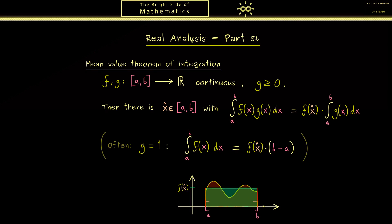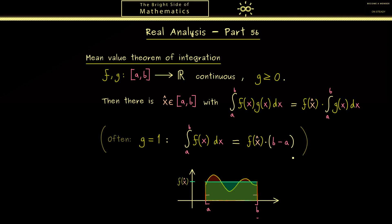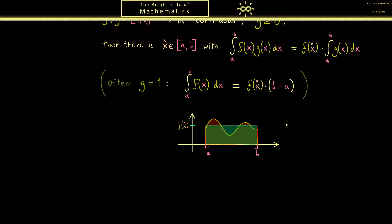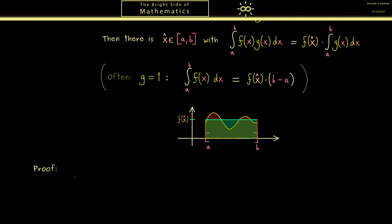Sadly the visualization for the general formulation of the theorem is not so easy. On the other hand, proving the general formulation is as hard as proving the special one, so we can just prove the whole theorem even if we only need the special version.